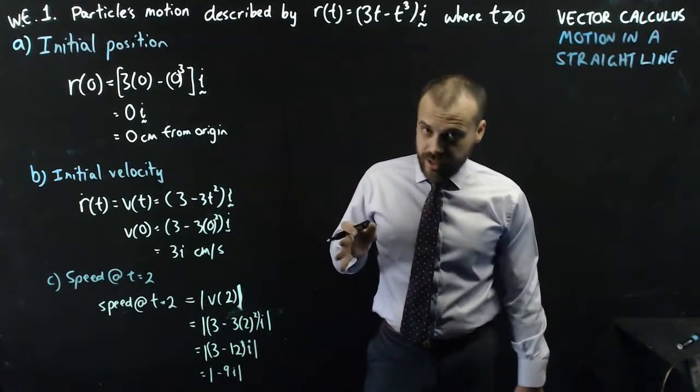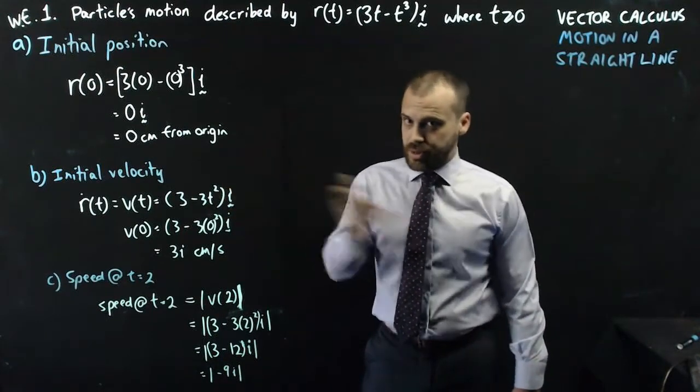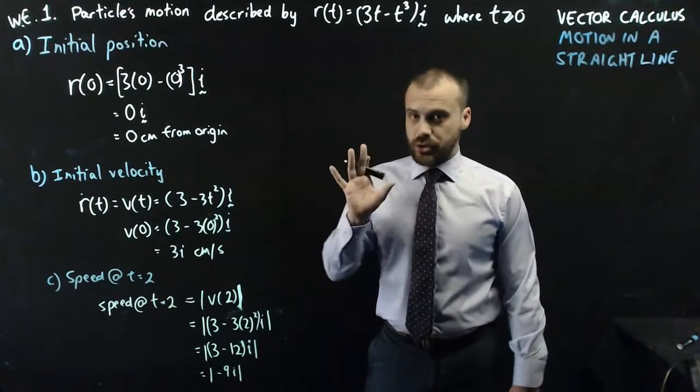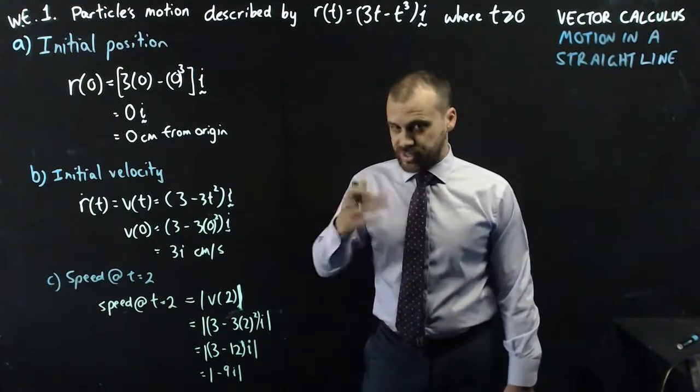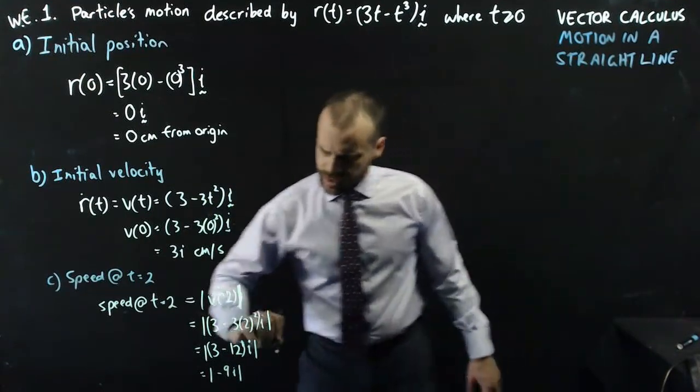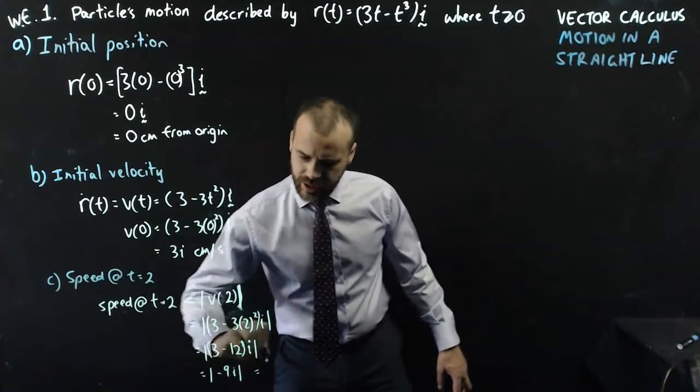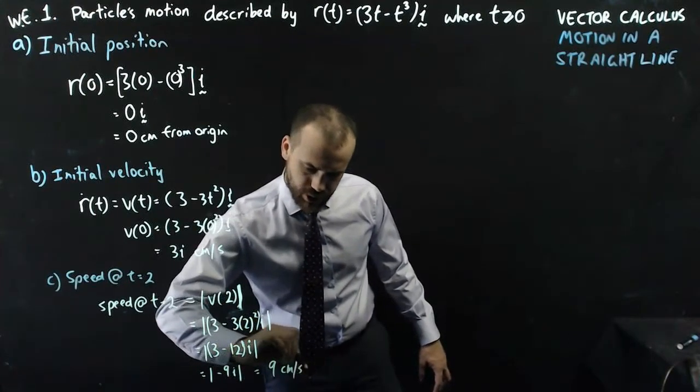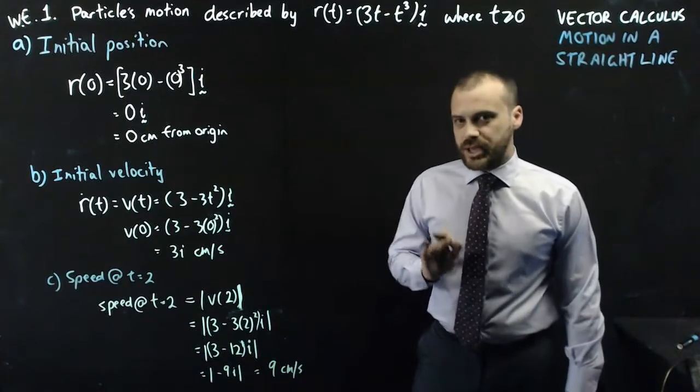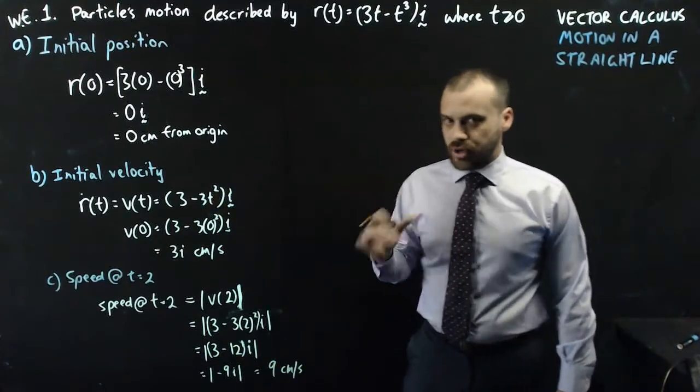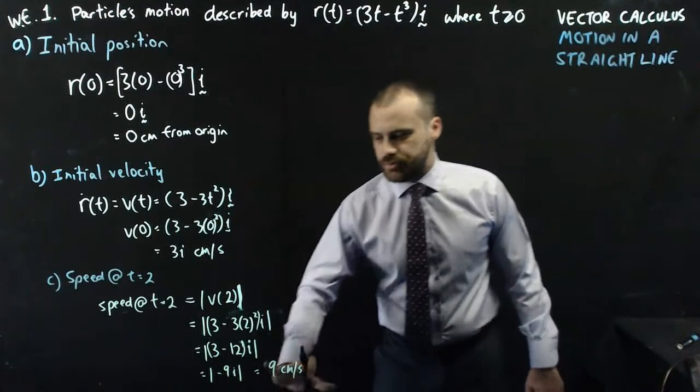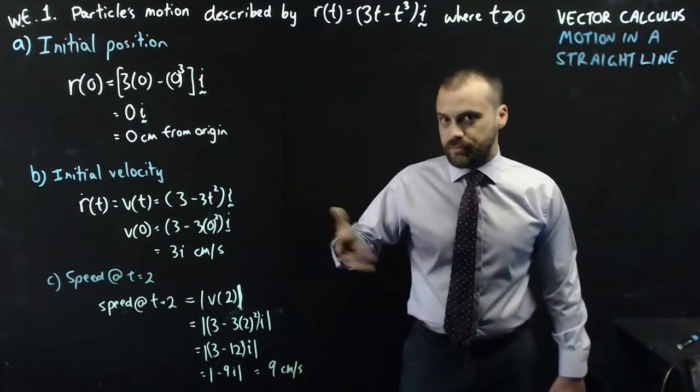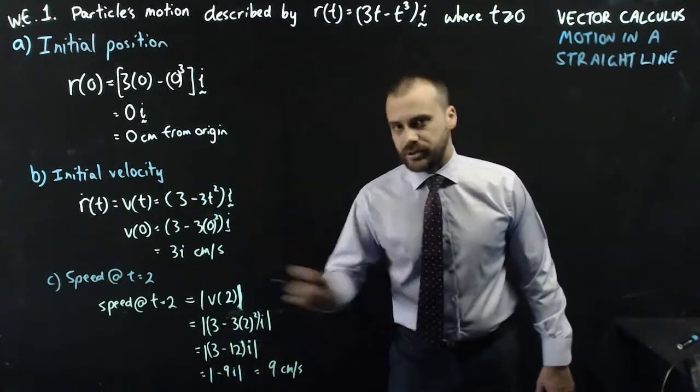Now speed can't be negative. You're either speeding forward or speeding backwards, but in any case, your speed is positive. It's the magnitude of your velocity. So our final speed is just 9 centimeters per second. Be careful with speed there. You can drive your car forward, you can drive your car backwards, but in any case, your speed is measured as a positive or as an absolute value.